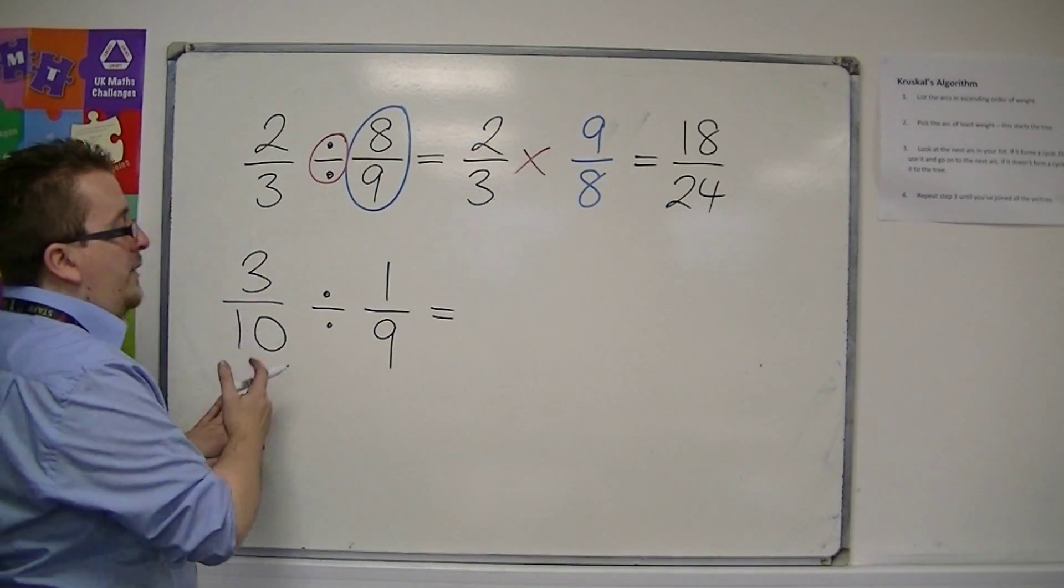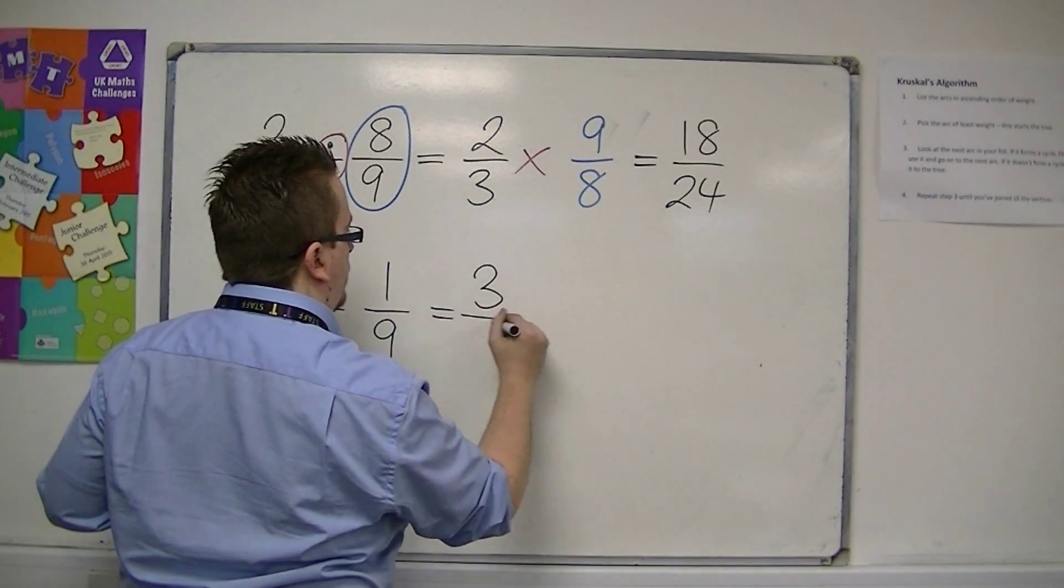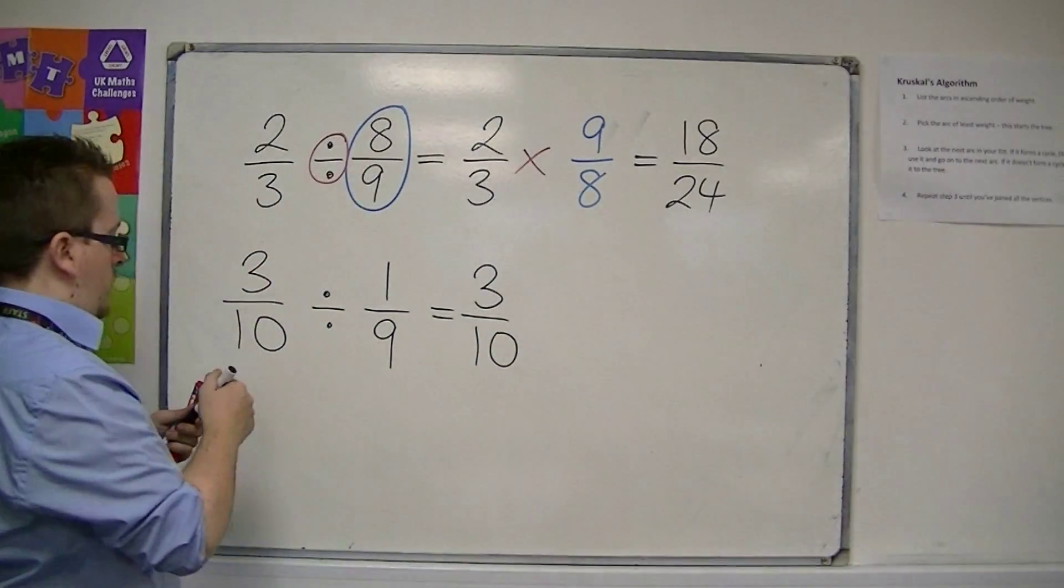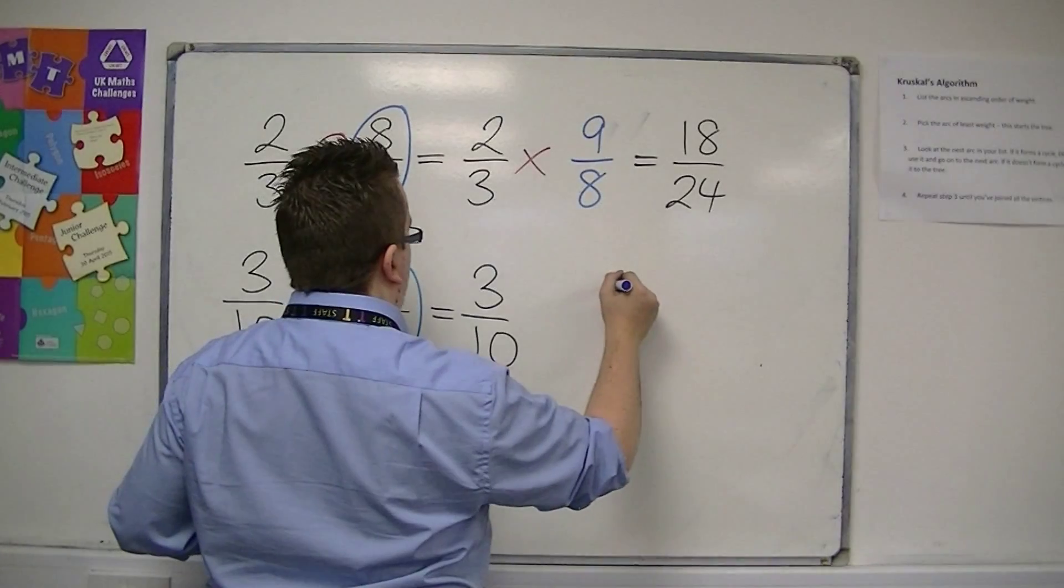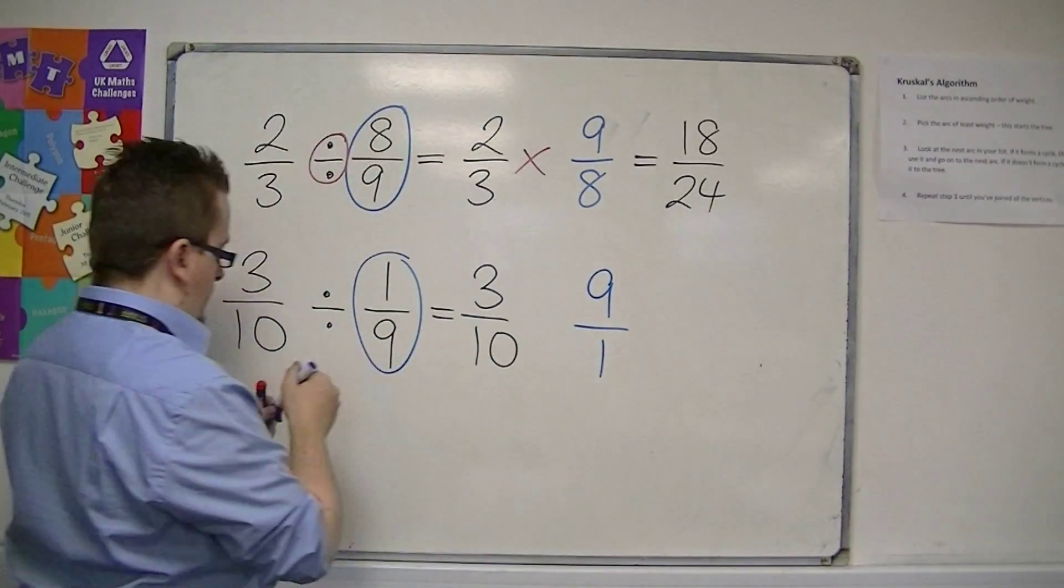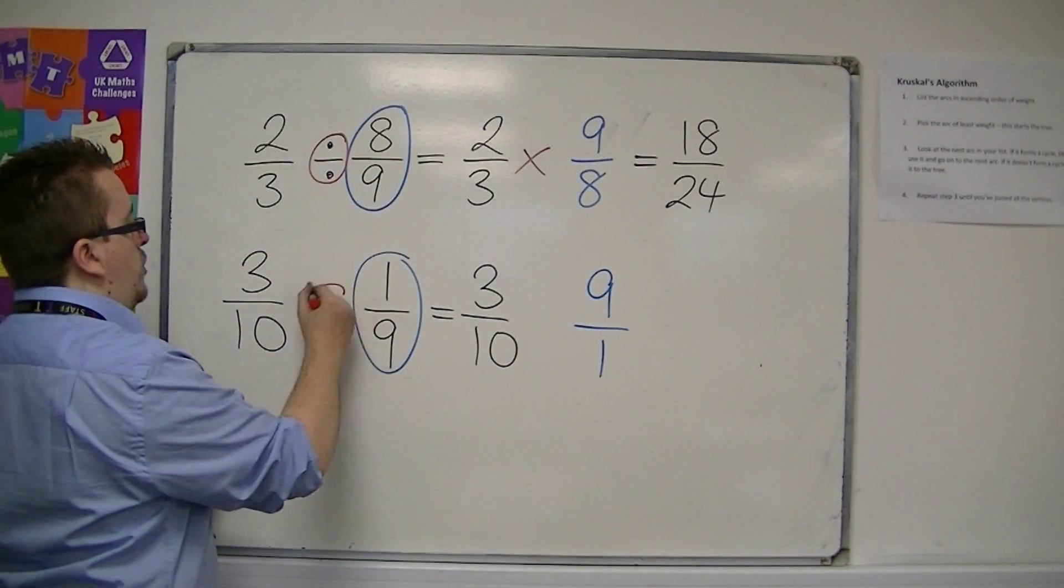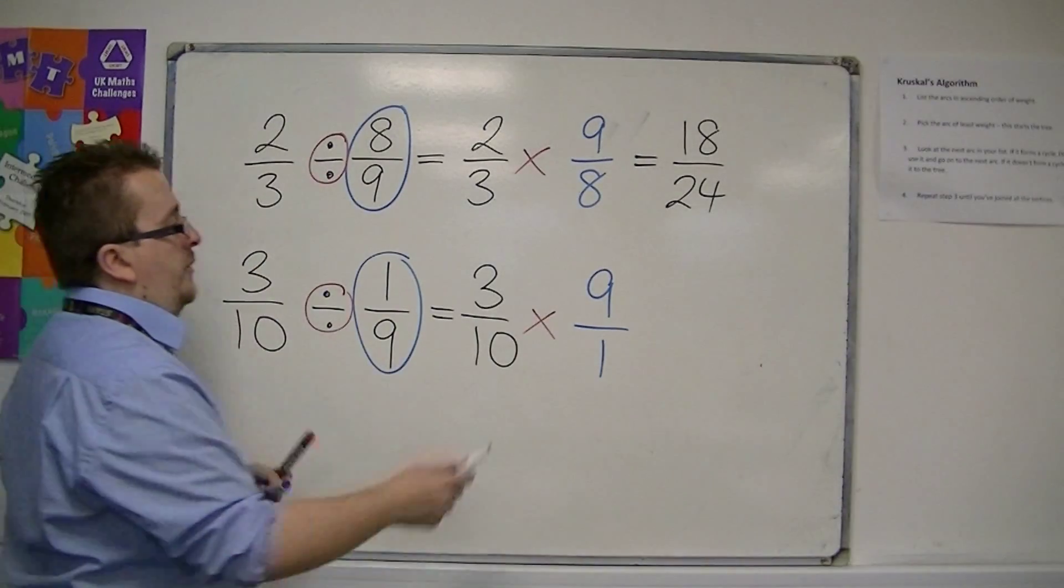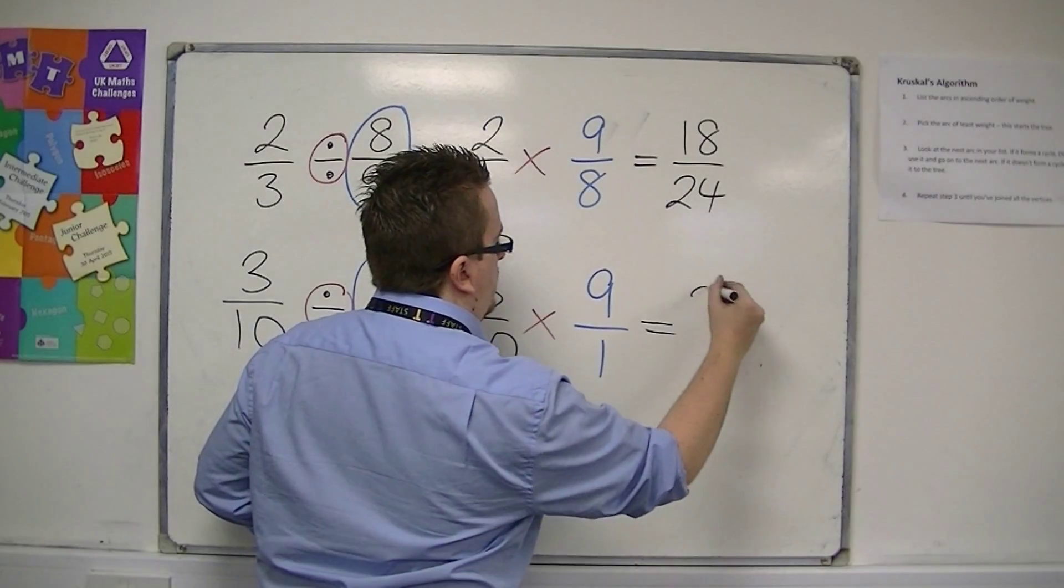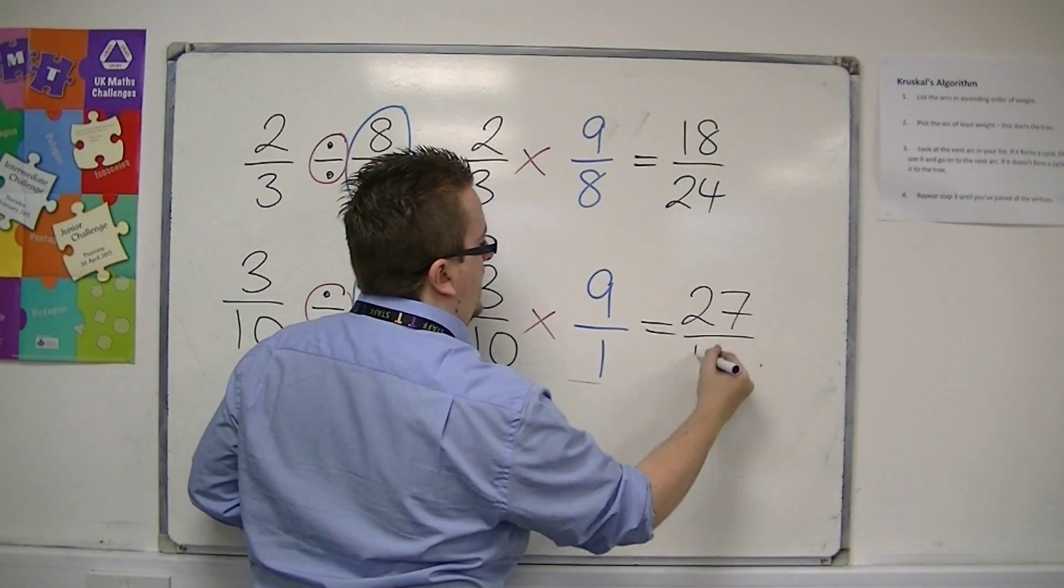So, you leave the left-hand fraction alone. You flip the right-hand fraction. And you turn the division into a times. So, we get 3 times 9 is 27. 10 times 1 is 10.